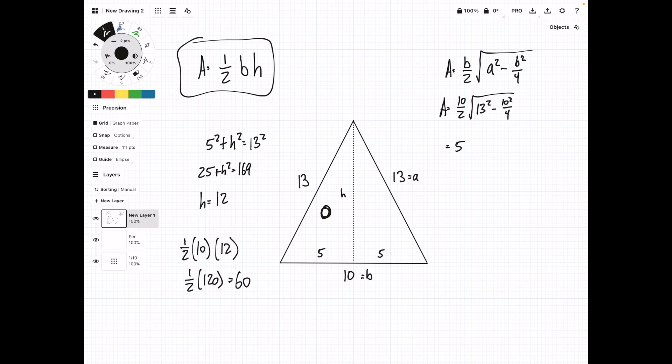Do a little bit of simplification here. 5 times the square root of 169 minus 25, and you should also recognize that we're seeing similar numbers to what we got on this side. So when you plug this into a calculator, you also get 60.